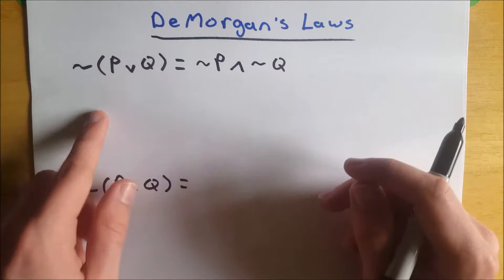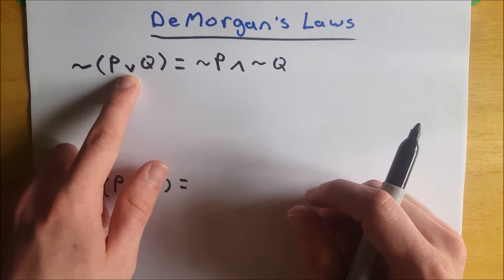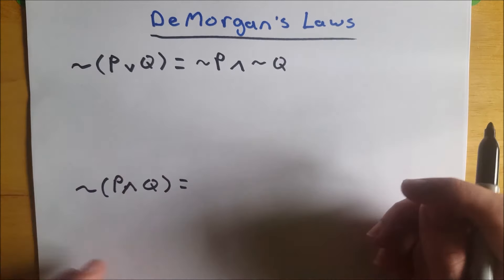You can see it works kind of like the distributive property. We get not P, we get the negation of or, which is and, and we get the negation of Q, not Q. Works pretty intuitively.